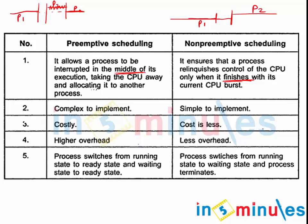Since processes can start and stop repeatedly in preemptive scheduling, it is complex to implement, whereas non-preemptive is very simple to implement — you simply process one after another. Due to the complex nature of preemptive systems, they become costly to develop, whereas non-preemptive scheduling is cheaper because it uses a straightforward algorithm.